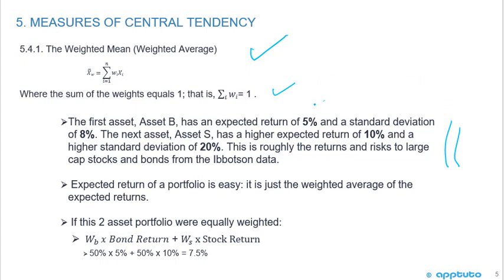The first asset, Asset B, has an expected return of 5% and a standard deviation of 8%. The next asset, S, has a higher expected return of 10% and a higher standard deviation of 20%. If this two-asset portfolio was equally weighted, the weighted average would be 50% × 5% plus 50% × 10%, and we'd have an expected return for the portfolio of 7.5%.